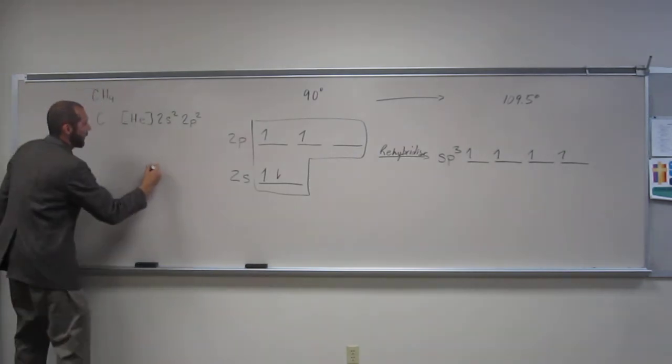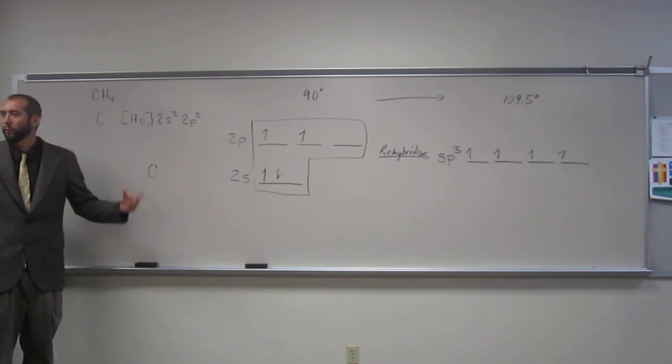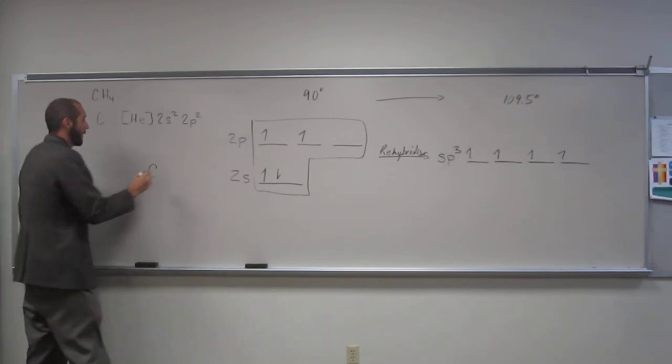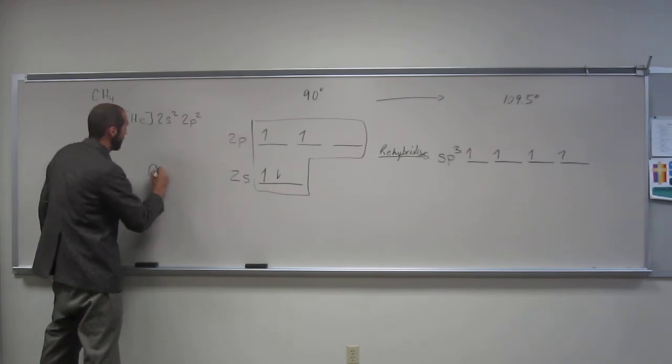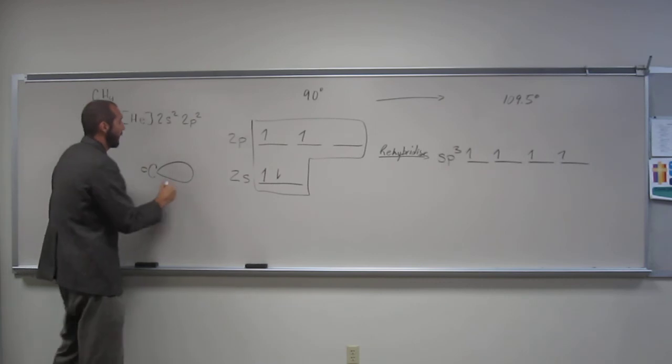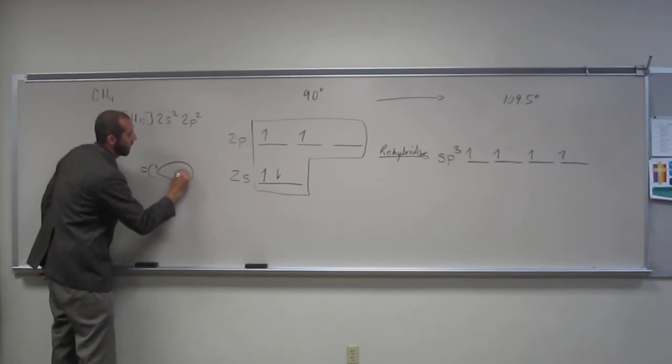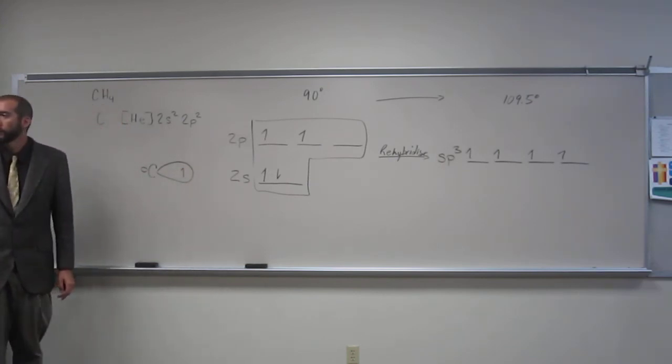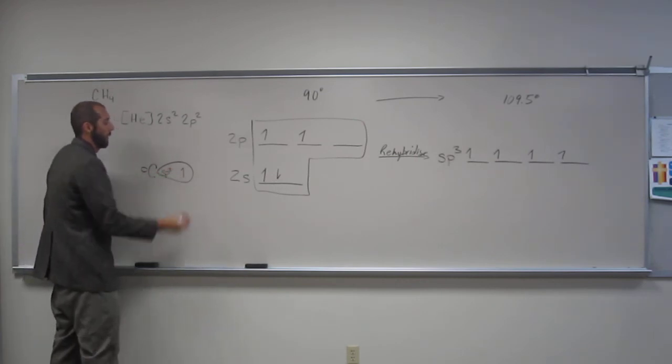So let's draw that carbon, or let's just draw one of them, because if we draw all of them, they'll get all mixed up and it'll be hard to tell. So this is one of the sp3 orbitals in carbon, and it's got its one electron. This will happen four times, so we'll say this is an sp3 orbital.